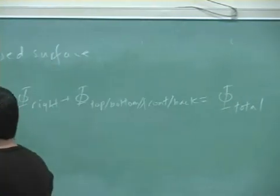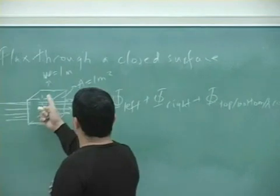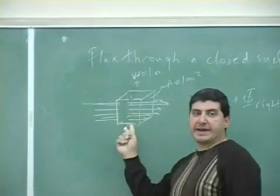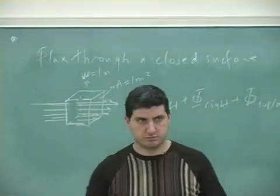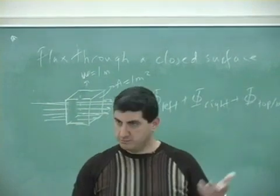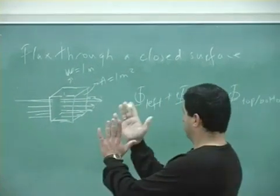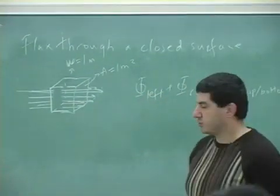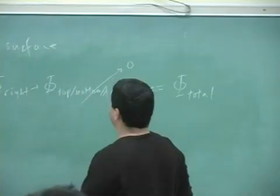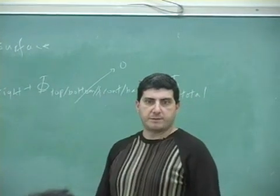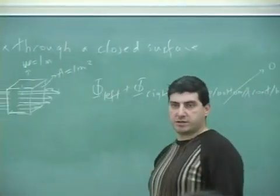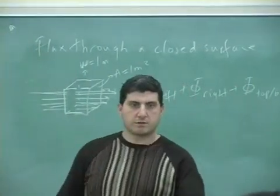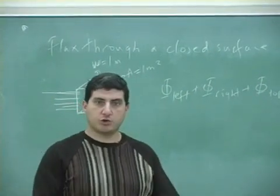So now what happens? Flux, top, bottom, front, back is zero, right? Because the front, back, top, bottom, they're parallel to the field lines. So these ones are all zero. Flux from left is going to be what? Flux from right, okay, so now the surface is no longer a single.